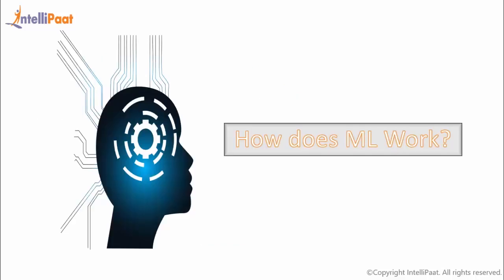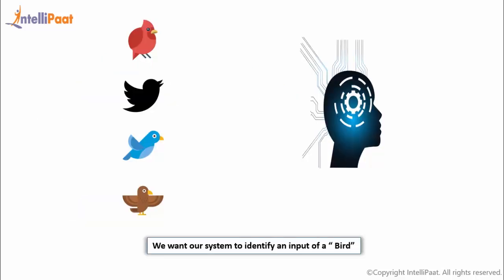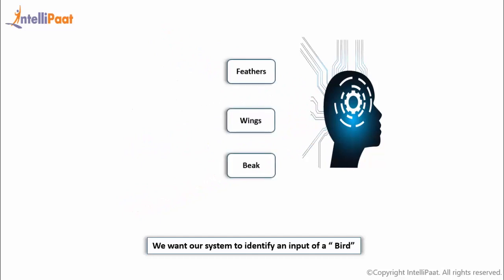Let's see how machine learning works. If we want our machine to recognize that given data is a bird, we first need to feed our system with data of all kinds of birds. Then we also need to specify the features of that particular object, which in this case are feathers, wings, or beak.